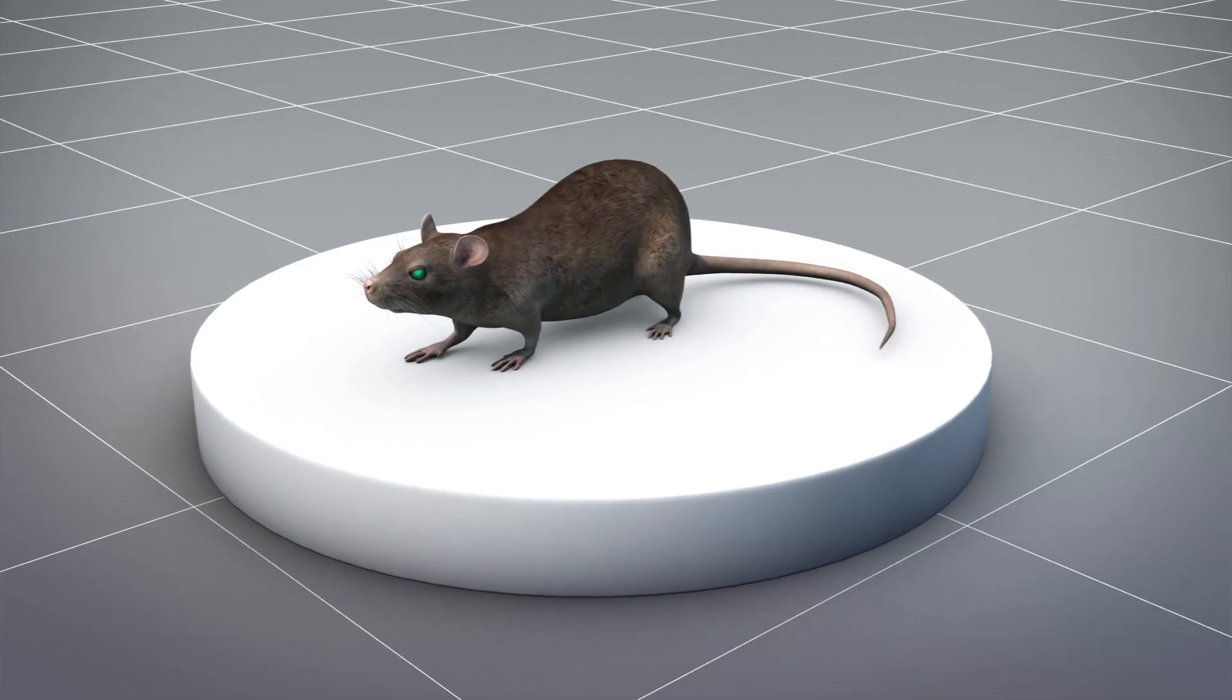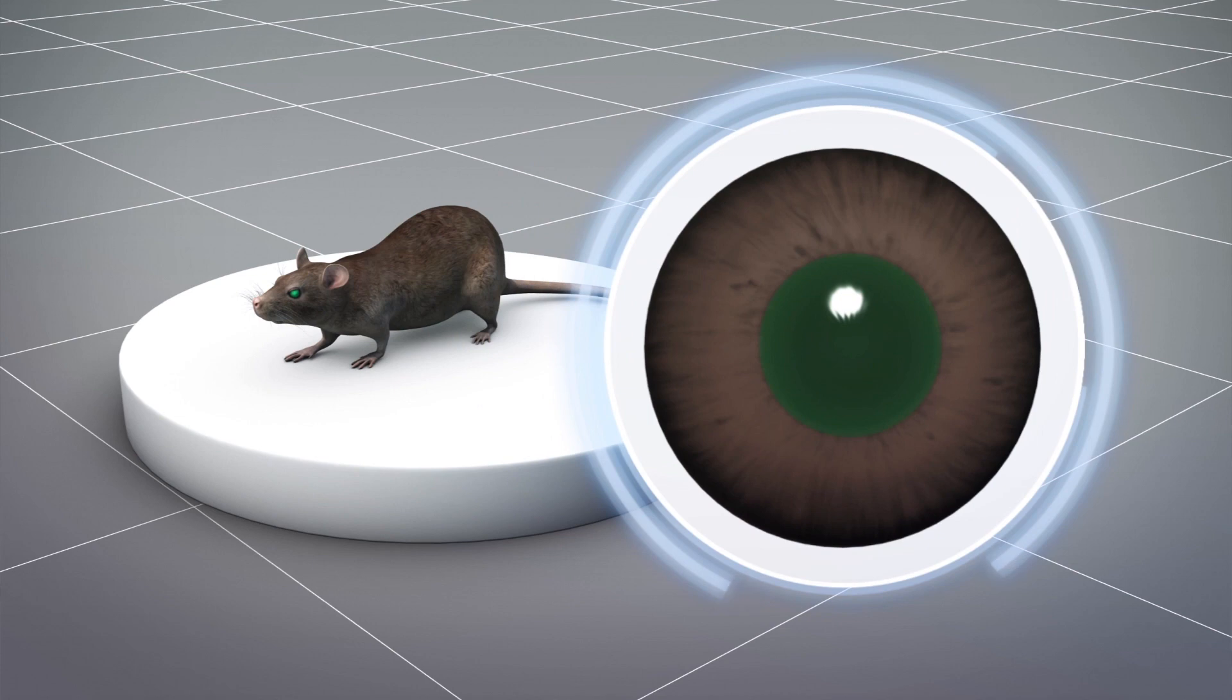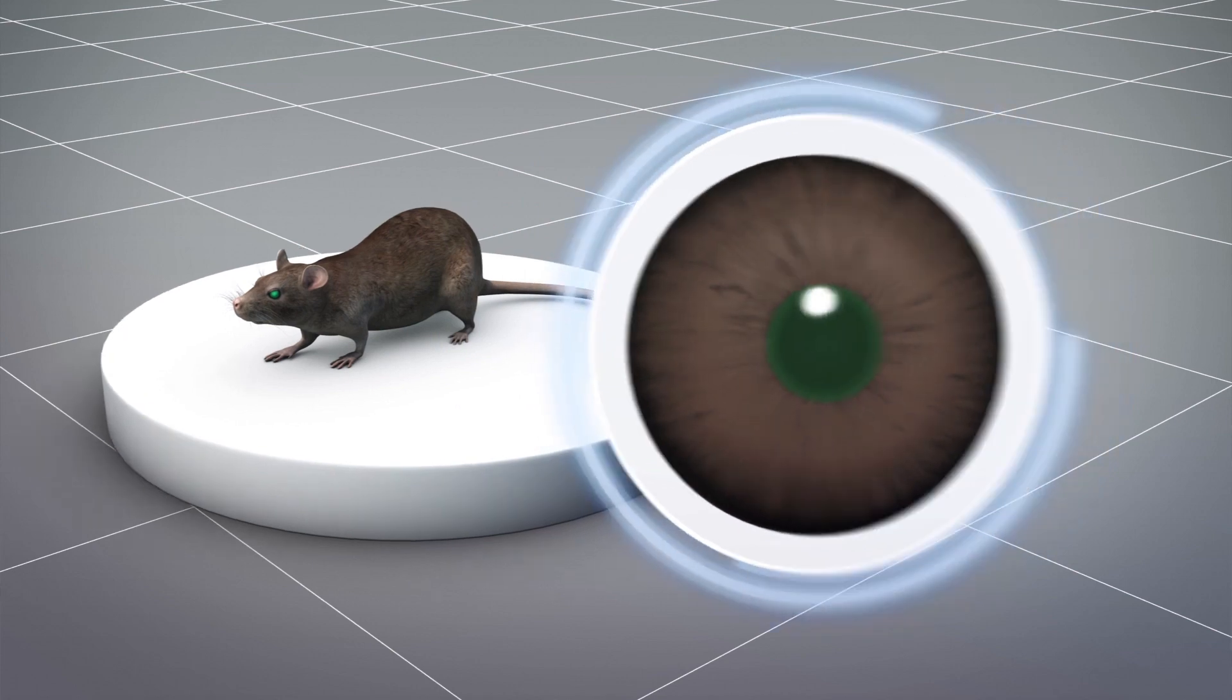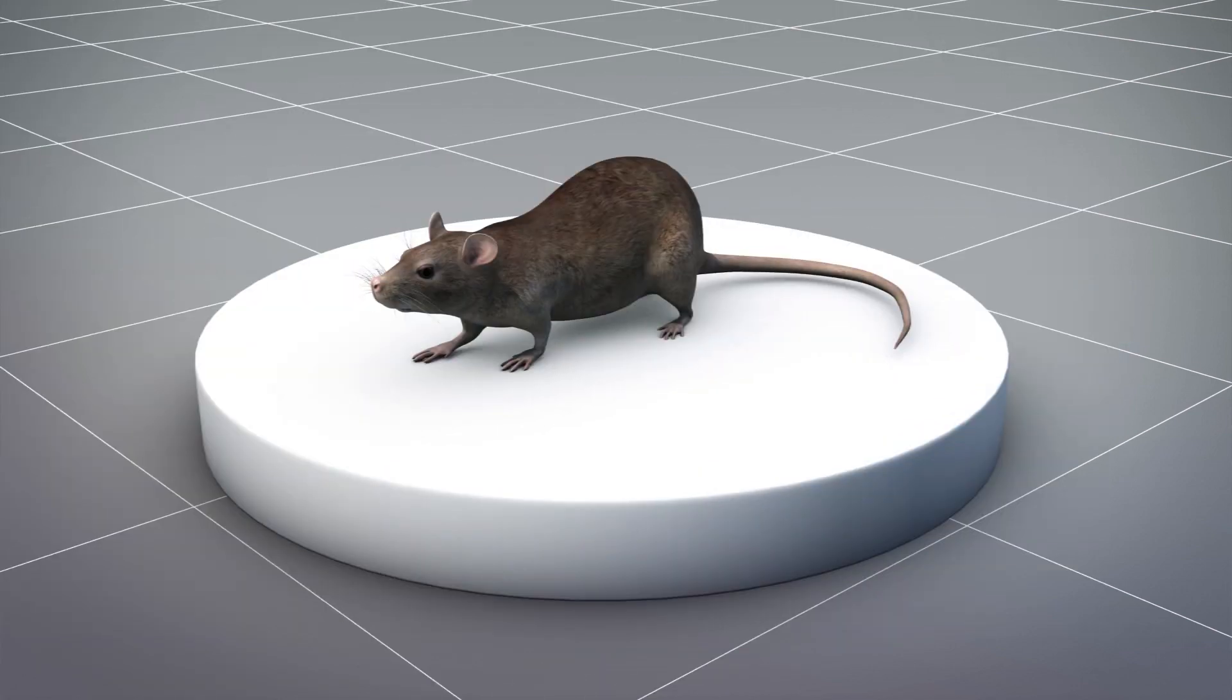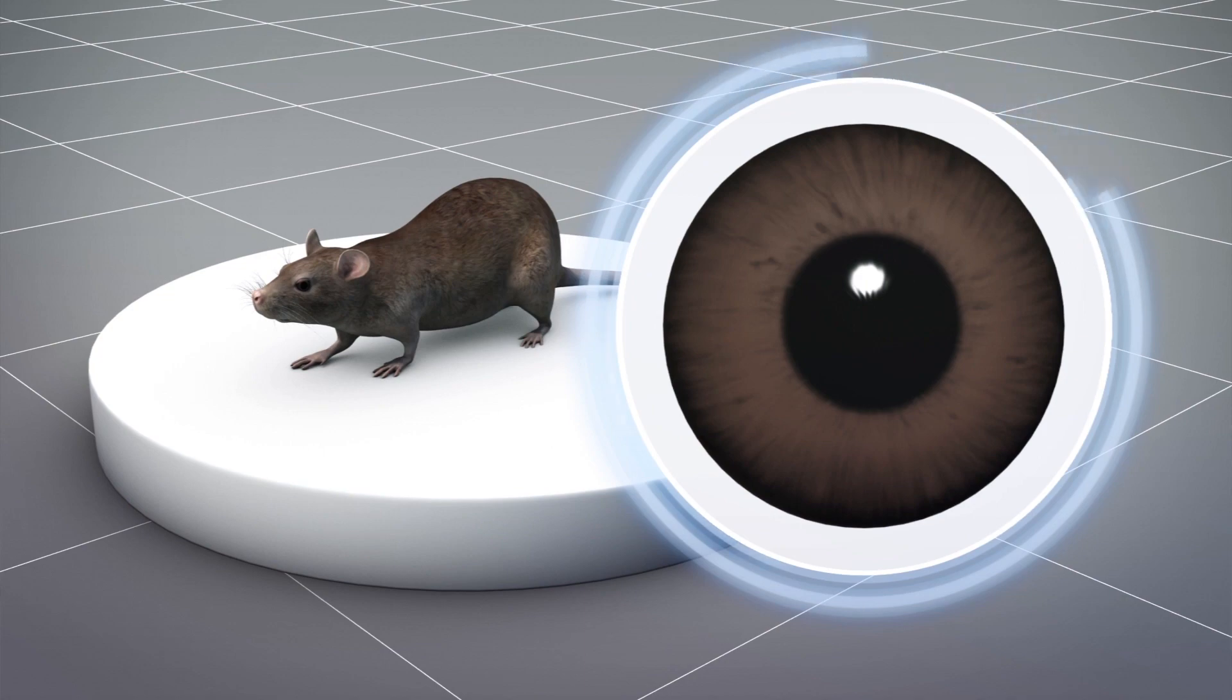According to a study published in the journal Cell, the pupils of the mice that received the nanoparticle injection were constricted. This meant their eyes were able to detect infrared light even during the day. Mice that only received a buffer solution did not have constricted pupils.